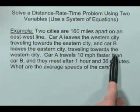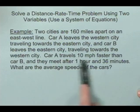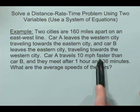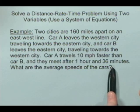So our situation is that we have two cars traveling toward each other. Car A is a little bit faster, 10 miles per hour faster than car B, and they meet after an hour and 36 minutes. The question is, what are the average speeds of the cars?